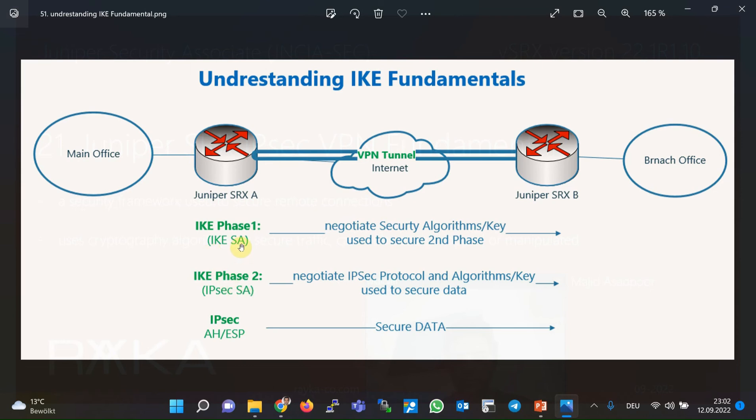IKE Security Association is the name of Phase 1, and IPsec Security Association is the name of Phase 2. Security Association, or SA, is an important term in IPsec protocol — it means the two ends of the connection agree on the algorithm and key to secure the communication.